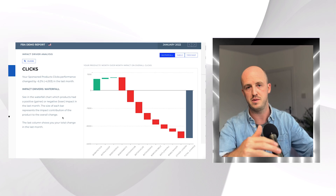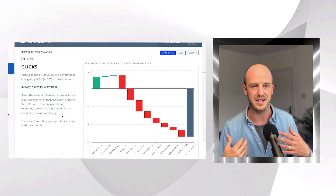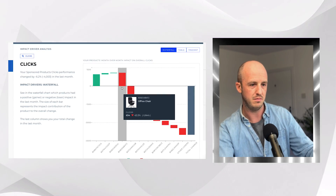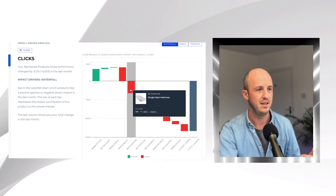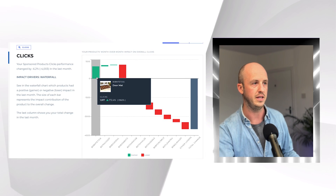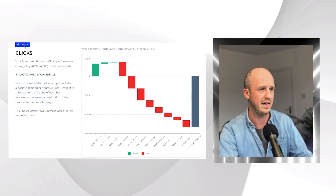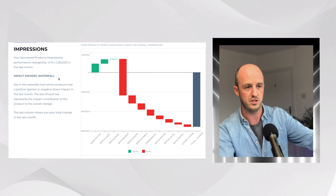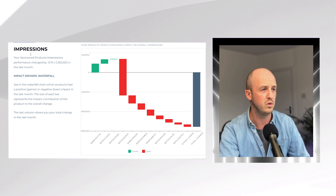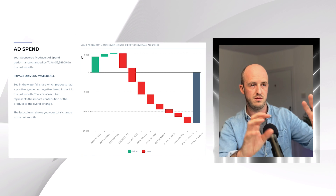Underneath the performance funnel, you've got what's called the impact driver. Here you can see the different areas of your campaigns which are contributing to profitability — or not. For example, this office chair isn't doing that great and clicks are down quite a lot, whereas this doormat has clicks going up massively. You can change which KPI you're looking at — impressions, ad spend, and so on — and use that data to start improving your campaigns. It may be that you've got the wrong keywords in there.